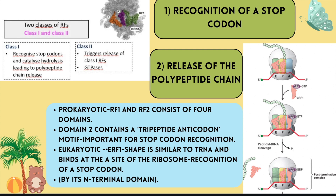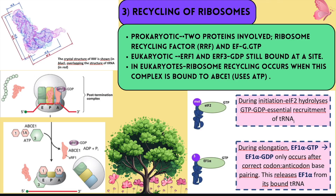In prokaryotes, Release Factor 1 and Release Factor 2 each consist of four domains. Domain 2 contains a tripeptide anticodon motif important for stop codon recognition. Domain 3 has a conserved GGQ motif important for peptide-tRNA hydrolysis, inducing hydrolysis of the polypeptide linkage to tRNA. Release Factor 3-GTP initiates the release of RF1/RF2 from the ribosome. In eukaryotes, eRF1 shape is similar to tRNA and binds at the A-site of the ribosome, recognizing stop codons via its N-terminal domain. eRF1 also has the GGQ motif. eRF3-GTP helps eRF1 cleave the polypeptide chain bond from tRNA, releasing the polypeptide chain into the cytoplasm. Cleavage can only happen when eRF1 recognizes the stop codon — a proofreading step.